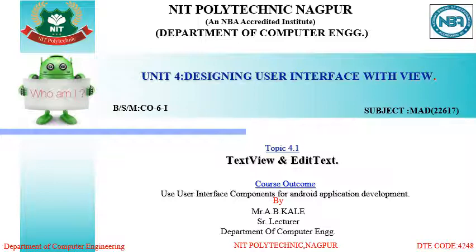The views or controls include text box, edit text, text view, check box, progress bar, image button, toggle button, and radio button. These are all called views, and we will study how to design our user interface with these different views.